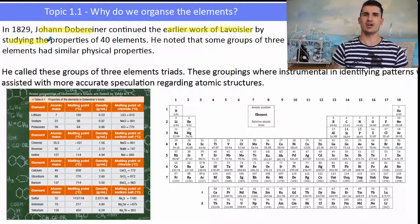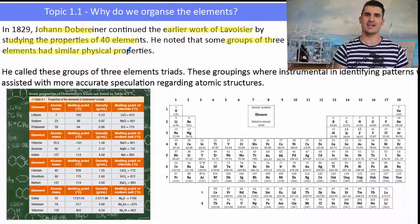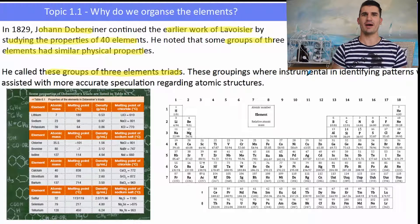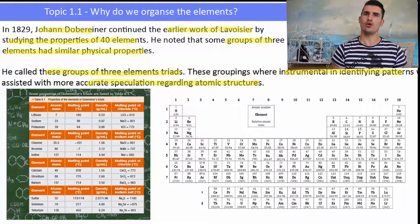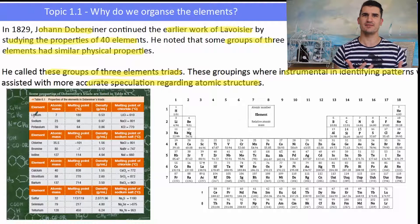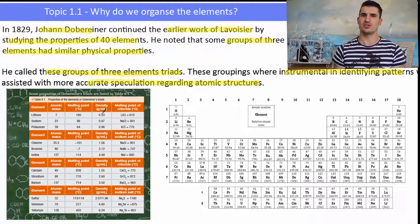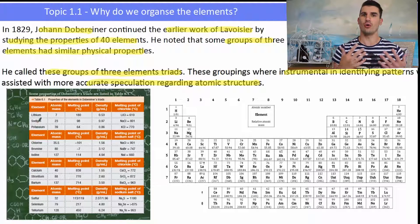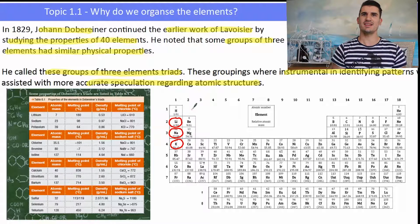It's now 1829 and a guy called Döbereiner continued the work of Lavoisier by looking at 40 elements he had available at the time. He started to group these elements into threes based on their similar physical properties — a physical property is like a melting point, a boiling point, or a density. He called these groupings triads, and these triads were instrumental in identifying patterns which helped us determine underlying atomic structures. He identified lithium, sodium, and potassium as having similar physical properties.